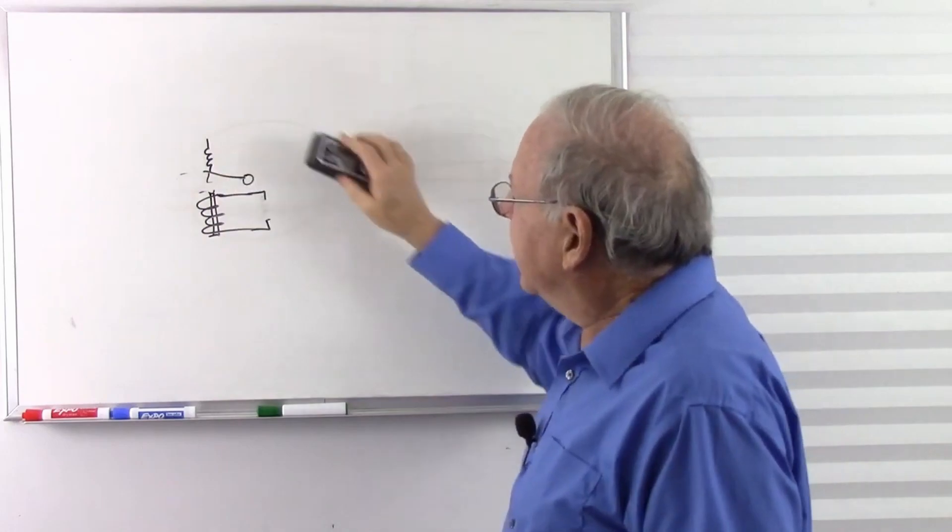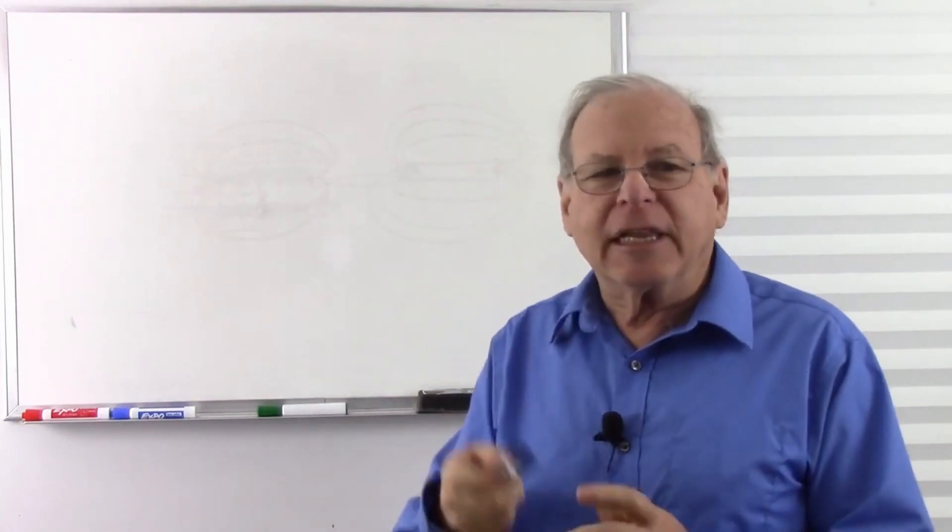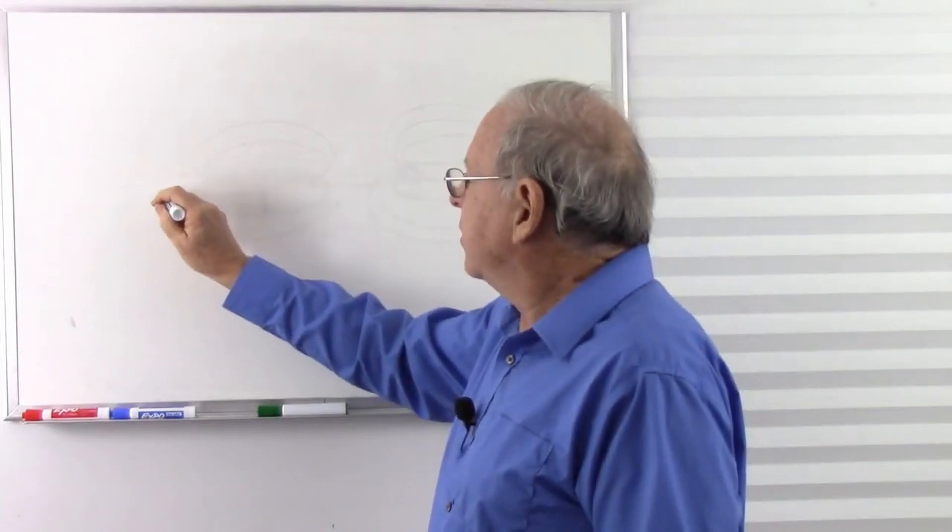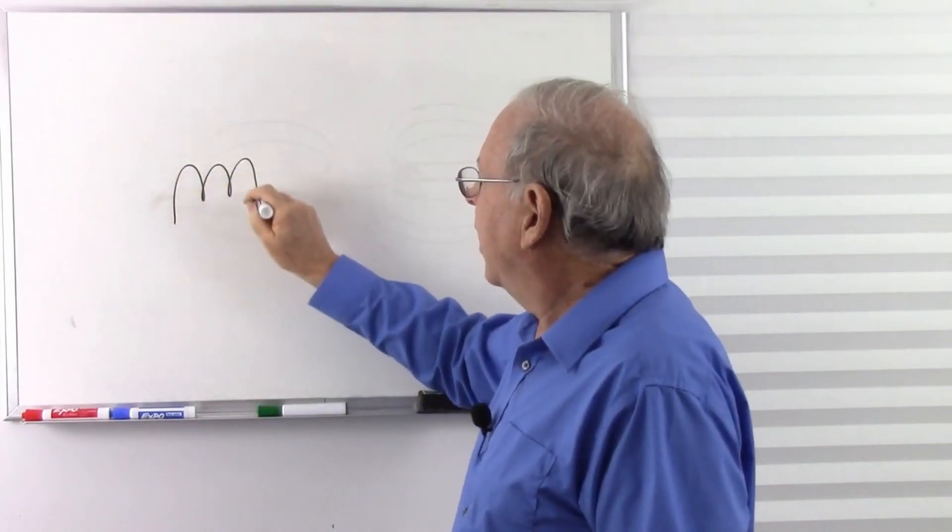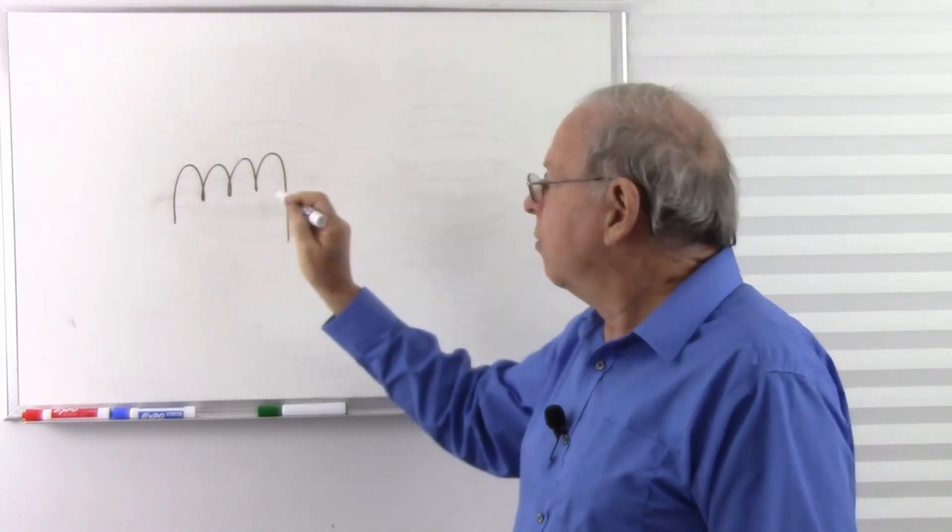But a more common actuator with a solenoid is going to be a linear actuator. So what we do is we take our coil. Let's come in from the side here. Here's our coil of wire. And it's got some kind of a framework to hold it.